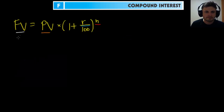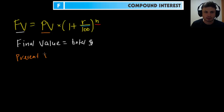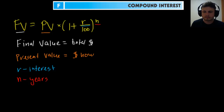Let's dissect the formula. FV is the final value — the total money you'll have at the end. PV is the present value — how much money you're putting in right now. R is the interest rate; it's divided by 100 to convert from percentage to a decimal so you can add it to 1. And n is the number of years you're investing for.